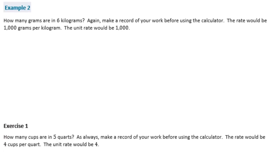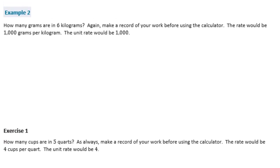Example 2. How many grams are in 6 kilograms? Again, make a record of your work before using the calculator. The rate would be 1,000 grams per kilogram. The unit rate would be 1,000. So how many grams are in 6 kilograms? So there's 1,000 grams per kilogram. So we need to do 6 kilograms times 1,000 grams. And that would get us how many kilograms. So 6 times 1,000 is 6,000 grams. So 6 kilograms is equal to 6,000 grams.